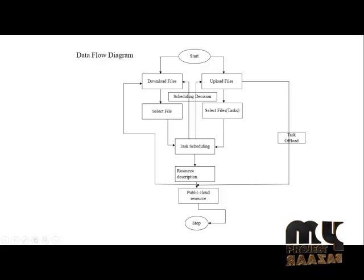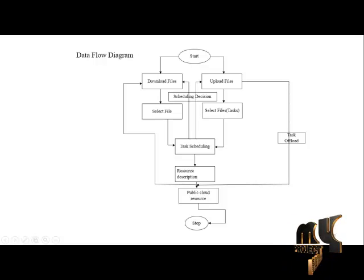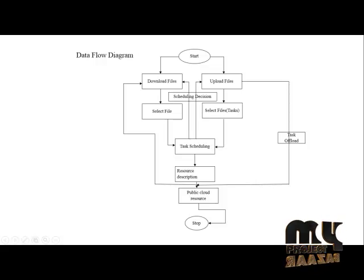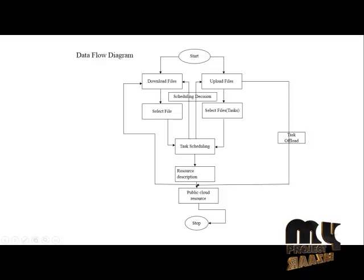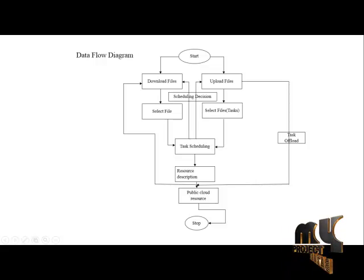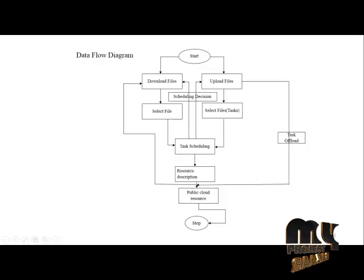After selecting the tasks, we send them to the task scheduler. The joint scheduling options will get the resource description and schedule the file. After scheduling, the cloud resource gets the head tokens. After getting the decision, the resource is allocated, and the resource scheduling decision is sent to the user, who can then upload the task into the cloud resources.